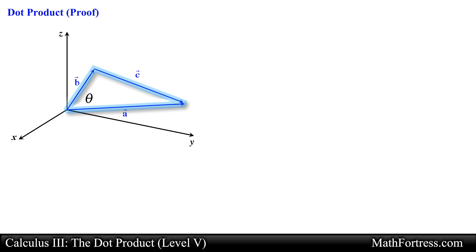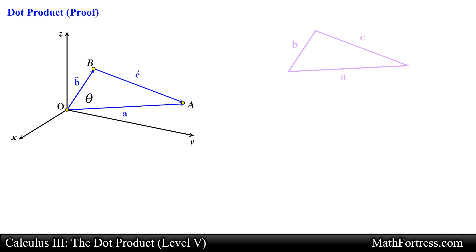Now we have a triangle with vectors as sides. Let's label the vertices of this triangle as point O, point A, and point B. Notice that this setup has all the characteristics of a classical trigonometry problem. We can easily find theta if we knew the lengths of all three sides.